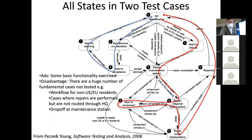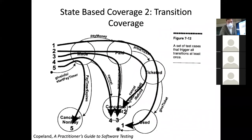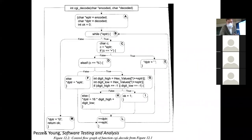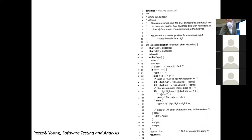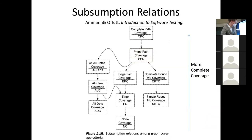We saw in our past few lectures that these ideas could be applied at the code level, at the system level, and they could be applied at a black box level in terms of broad functionality. So this is the general idea of what we're trying to explore. We've already seen two levels of testing within the subsumption hierarchy. We saw node coverage and edge coverage. What does it mean that edge coverage subsumes node coverage?